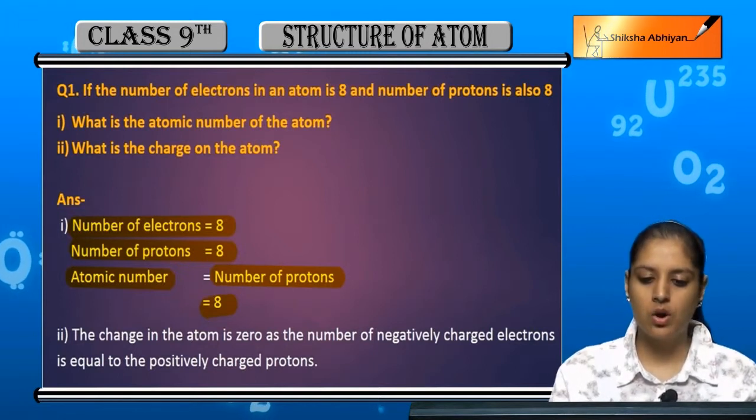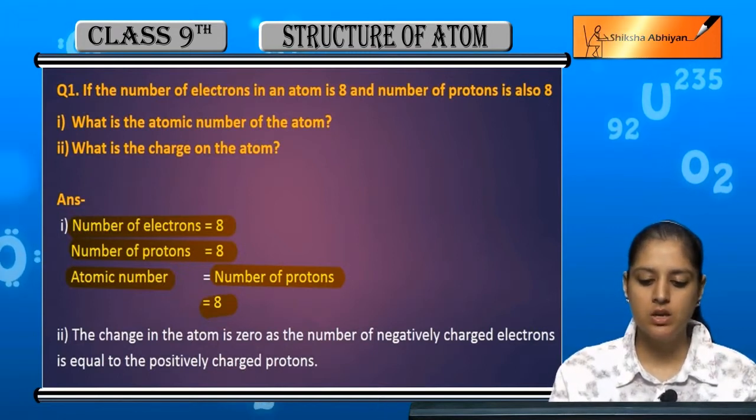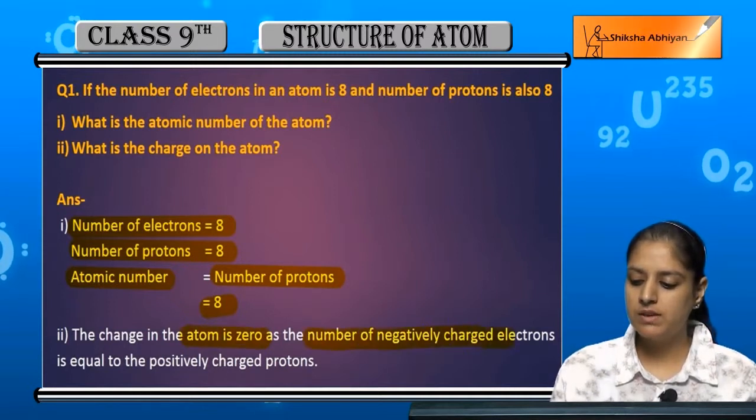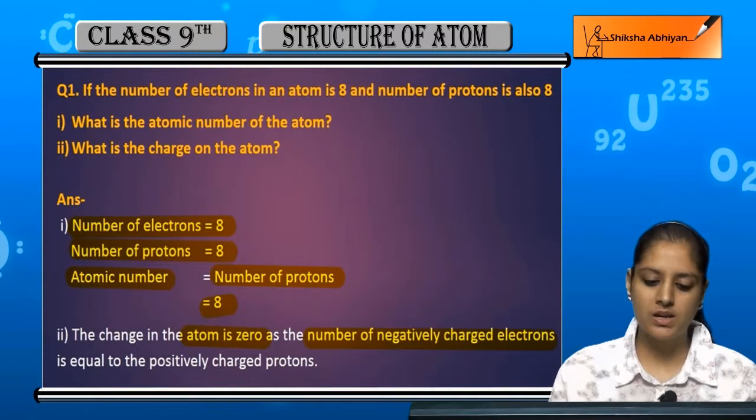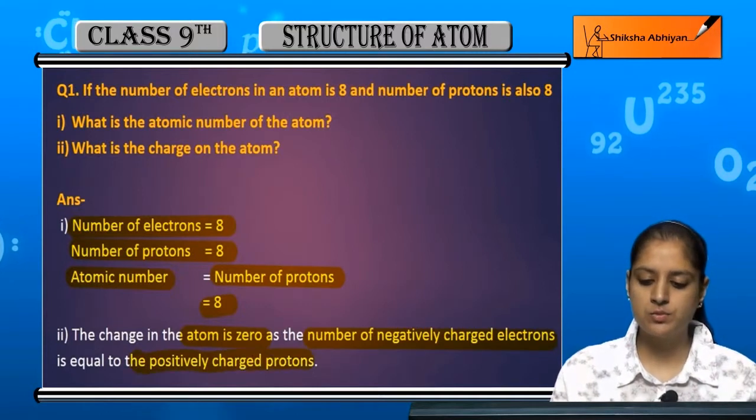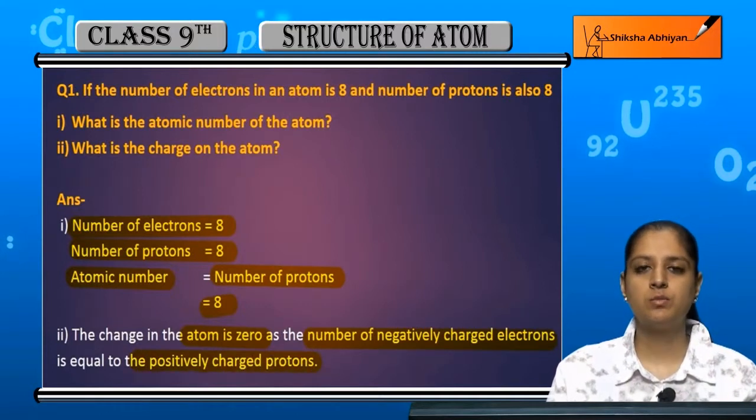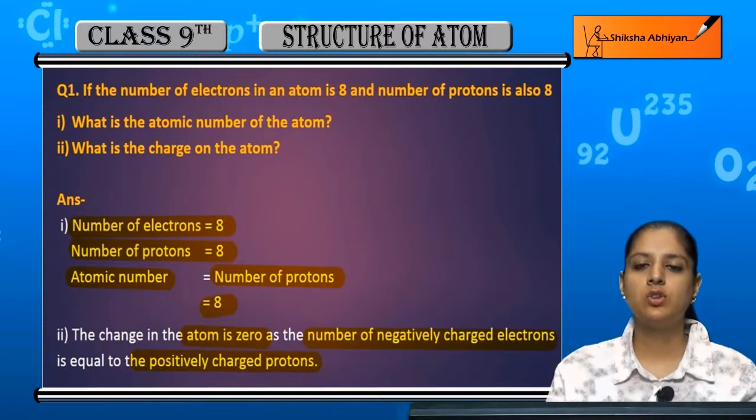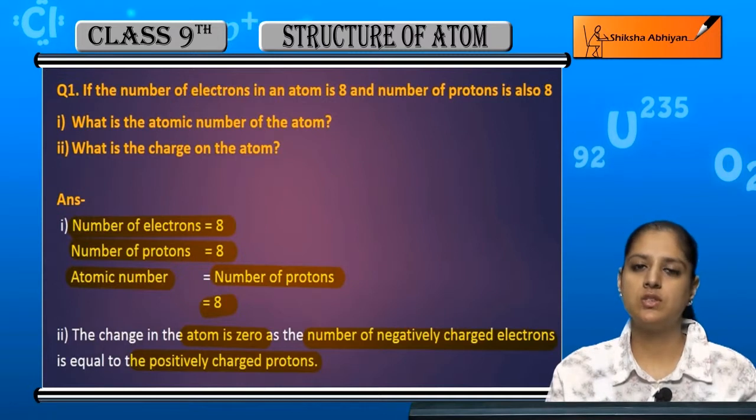And the charge of this atom is zero, because the number of negatively charged electrons is also eight and positively charged protons is also eight. So positive charge and negative charge both are equal, so we balance the atom and its net charge is zero.